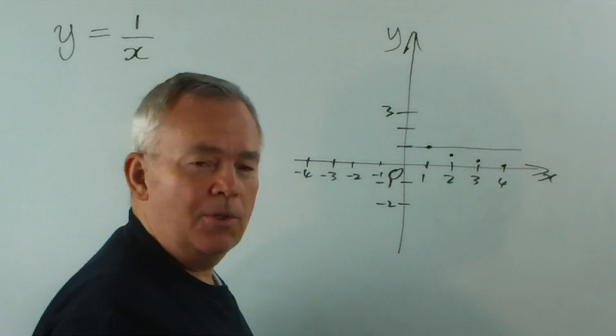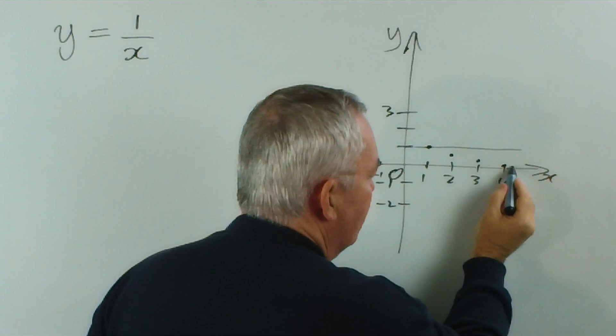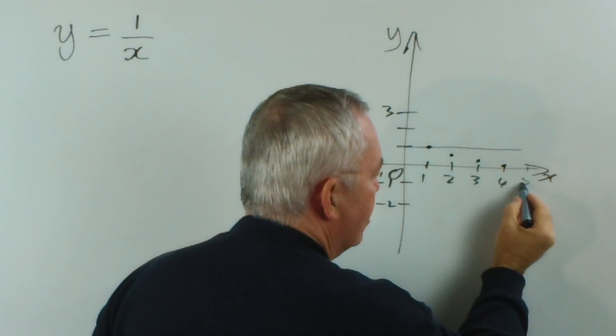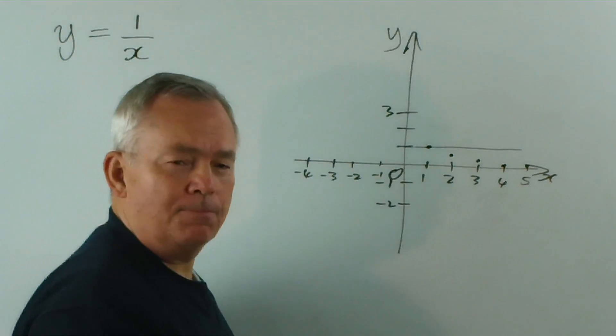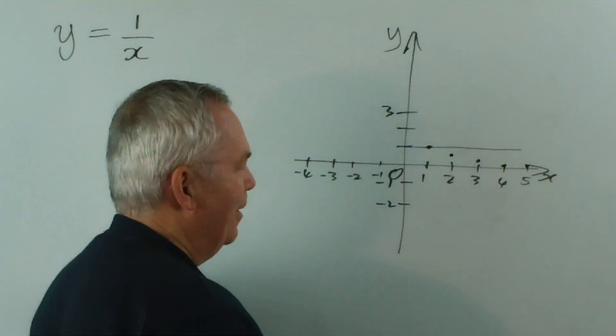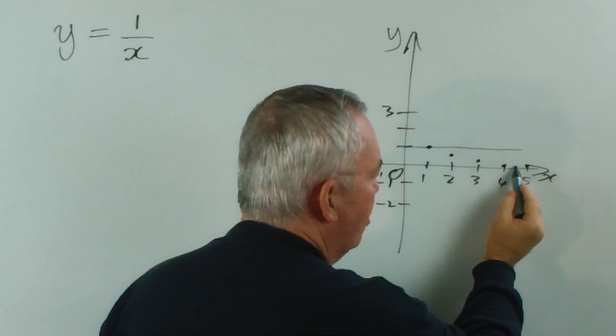Well, so far we can observe two things. One is that this is decreasing in value. I think you'll see that when it gets to 5, we're going to have 1 fifth and so forth. But still, I hope you also see that we're getting something like a curve.